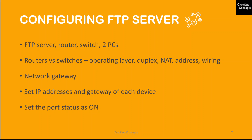Before going further, we'll look into how to differentiate between a router and a switch based on properties like operating layer, duplex, network address translation, type of address used and wiring. A router operates at the third layer, the network layer, of the OSI model, whereas switches operate at the second layer, the data link layer. Routers are half duplex, whereas switches are full duplex. Routers can perform network address translation, whereas switches cannot. Routers operate around IP addresses, while switches revolve around MAC addresses. Routers can work with both wireless and wired networks, whereas switches are confined to wired connections only.